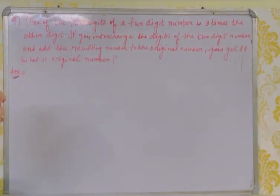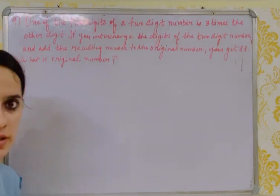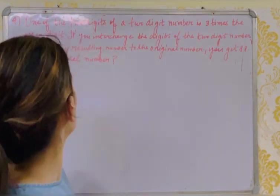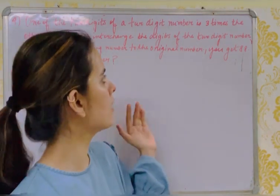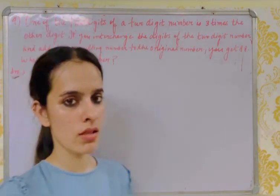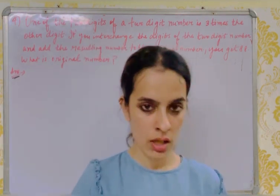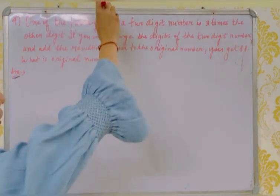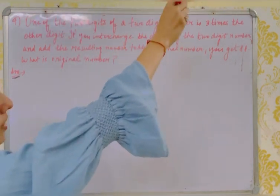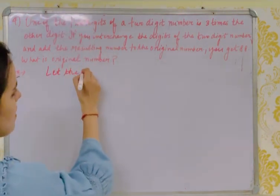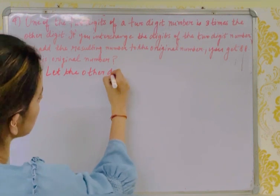Question 4: One of the two digits of a two-digit number is 3 times the other digit. If you interchange the digits and add the resulting number to the original number, you get 88. What is the original number? Let the other digit be x, so the first digit is 3x.